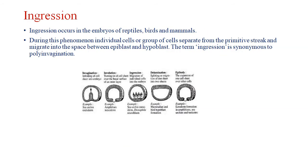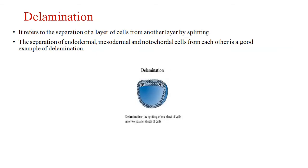Ingression also occurs in the endoderm in reptiles, birds, and mammals. During this phenomenon, a group of cells separates from the primitive streak and migrates into the space between the epiblast and hypoblast. The term ingression is synonymous with polydelamination.